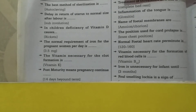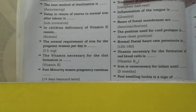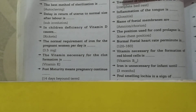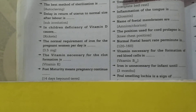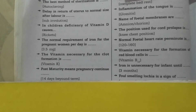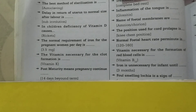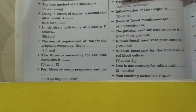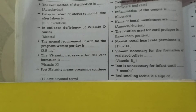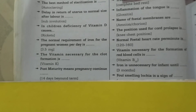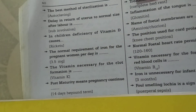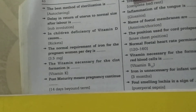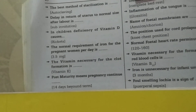The vitamin necessary for the formation of red blood cells is vitamin B12, otherwise called cyanocobalamin. Iron is unnecessary for infants until 3 months. Foul-smelling lochia is a sign of puerperal sepsis.